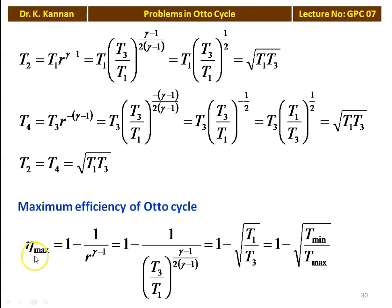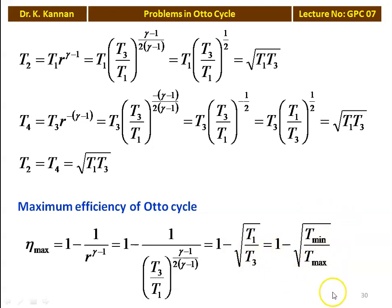The maximum efficiency: η_max = 1 − 1/R^(γ−1). Substituting the optimum R value, η_max = 1 − (T1/T3)^(1/2), which equals 1 − √(T_min/T_max). This equation is very important for competitive examinations — given minimum and maximum temperatures, you can calculate the maximum efficiency of the cycle. This equation is also applicable to the Brayton cycle.